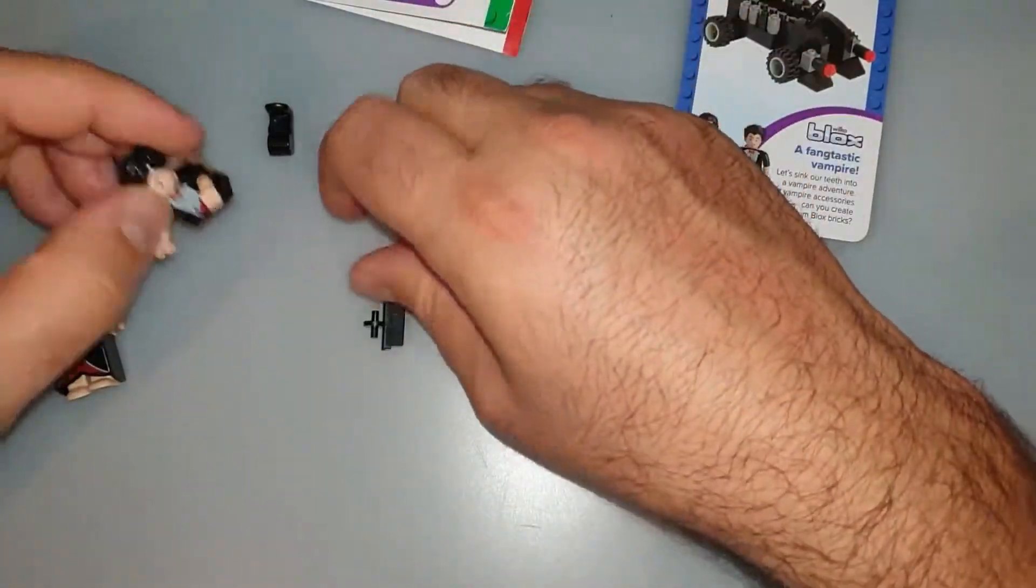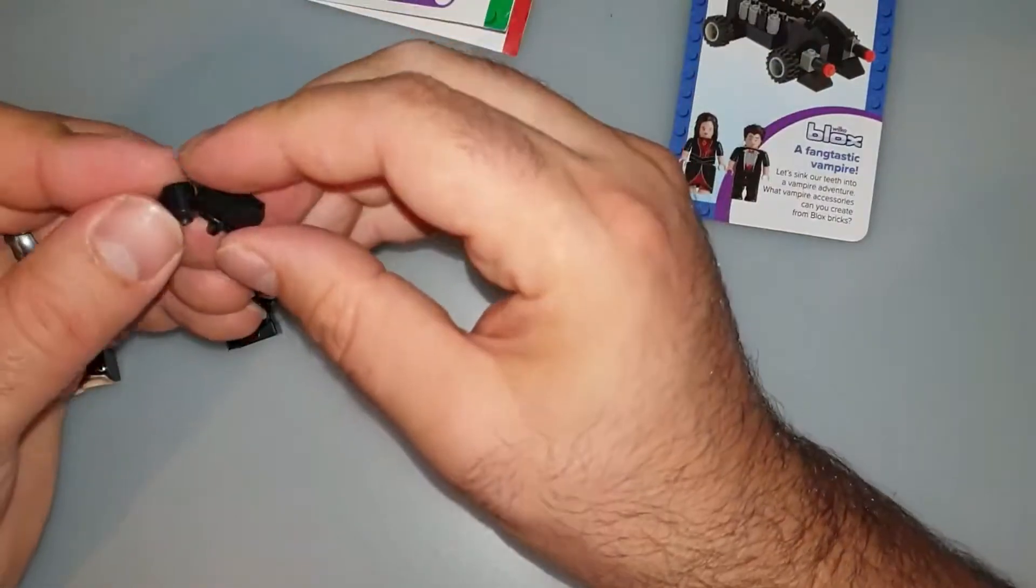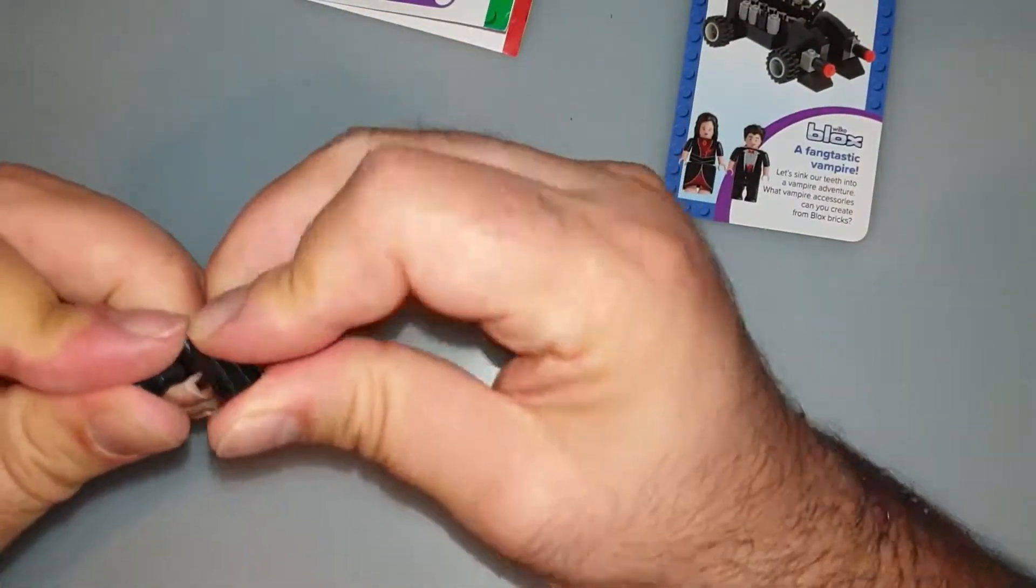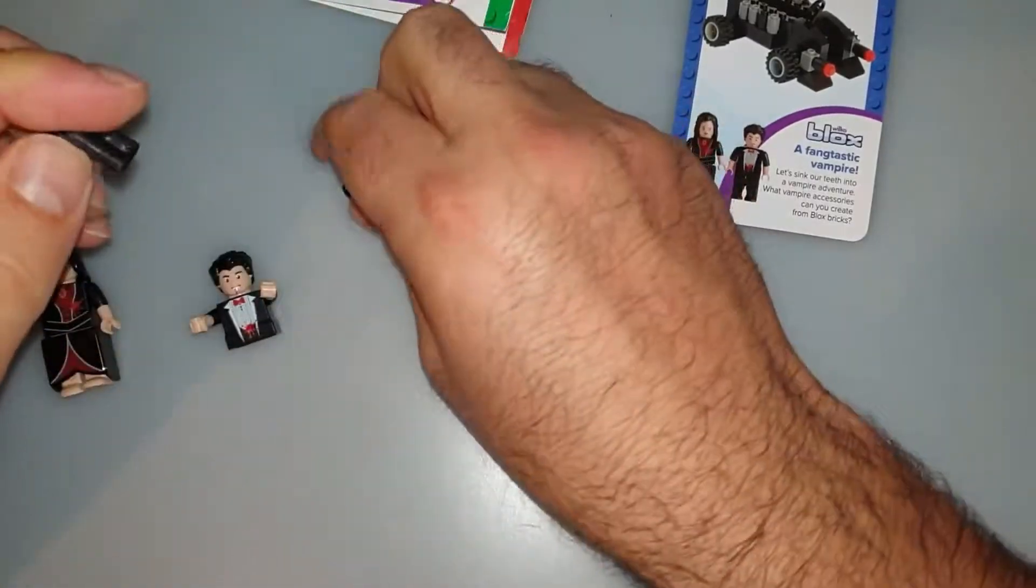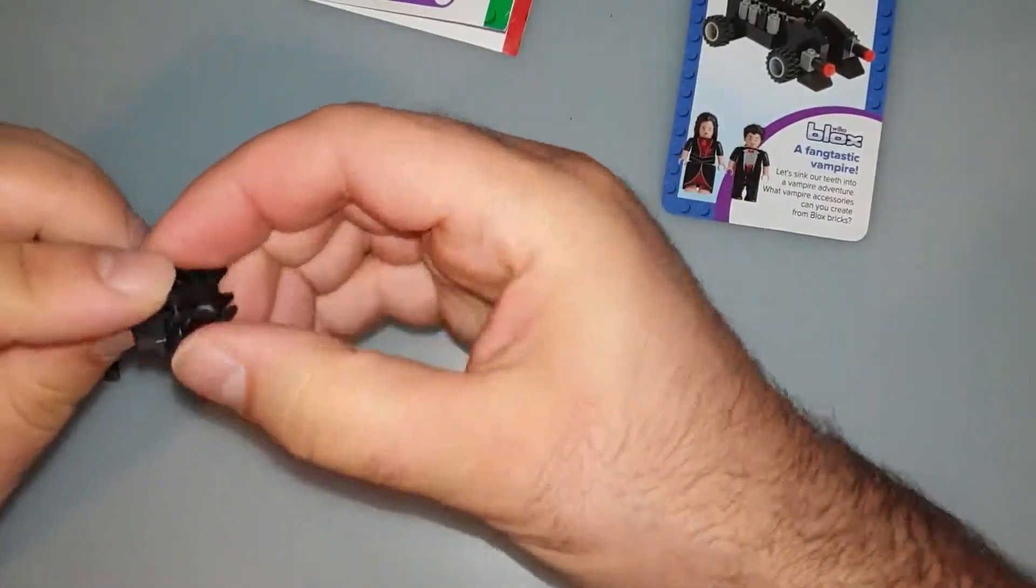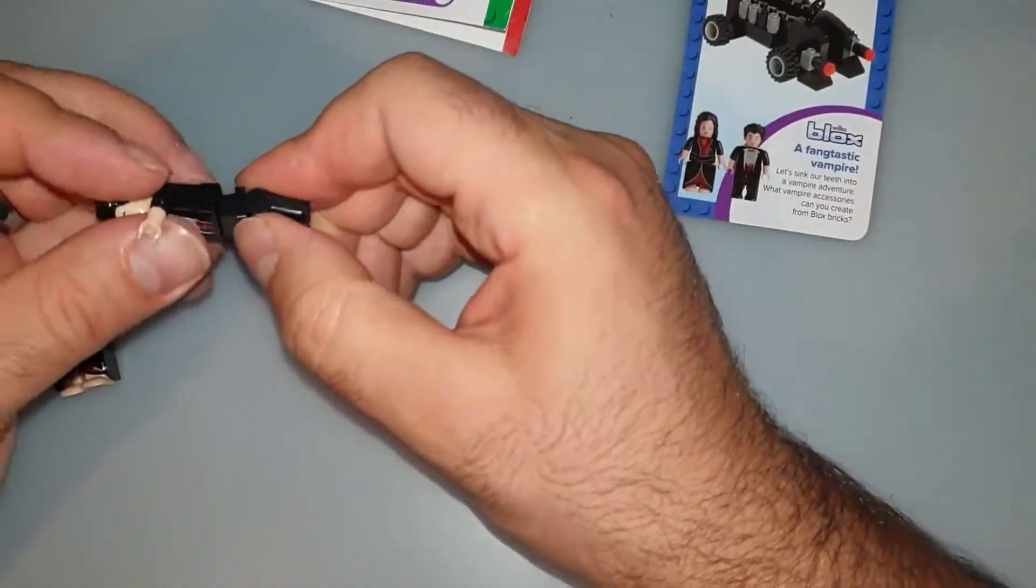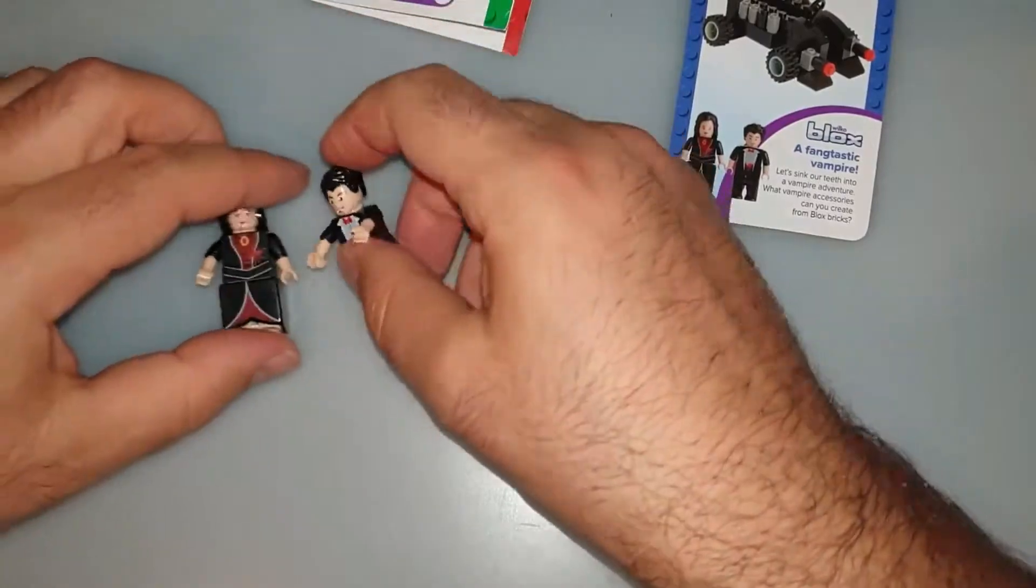Ta-da. They look friendly, which is part of the delusions vampires are creating. And we are ready. Ladies and gentlemen, Mr. and Mrs. Vampire.